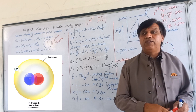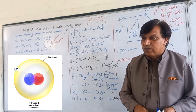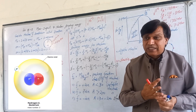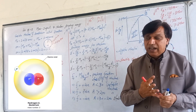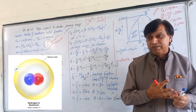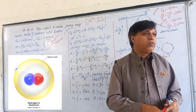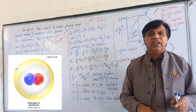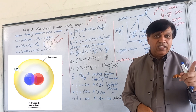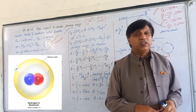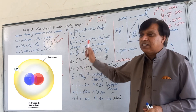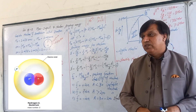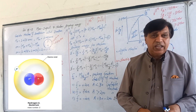From a chemistry point of view, the three isotopes of hydrogen are called protium, deuterium, and tritium. But in nuclear physics, the electron cloud is not considered. So we call the nucleus of protium the proton, the nucleus of deuterium the deuteron, and the nucleus of tritium the triton. To understand mass deficit, we are taking the second isotope — the nucleus of deuterium, called the deuteron.